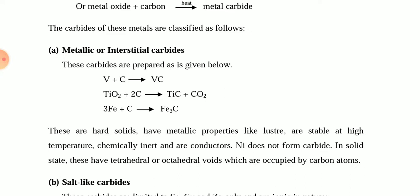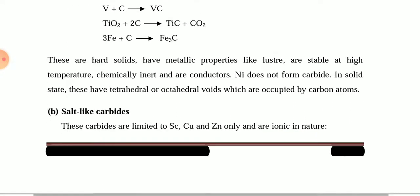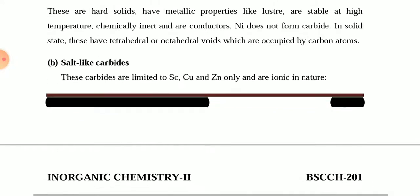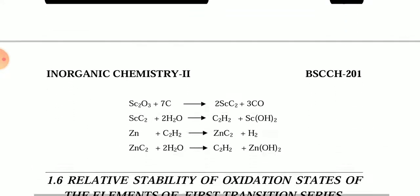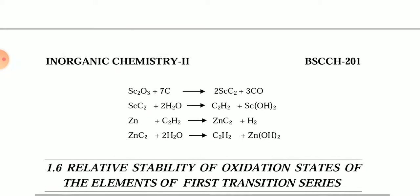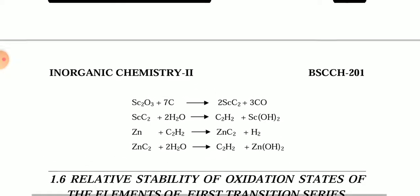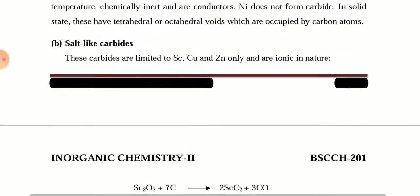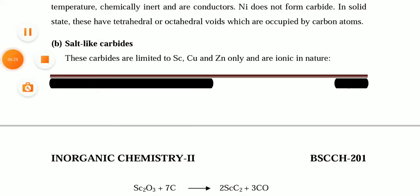The second type are salt-like carbides. These carbides are limited to scandium, copper, and zinc only, and they are ionic in nature. This concludes today's lecture. Thank you very much.